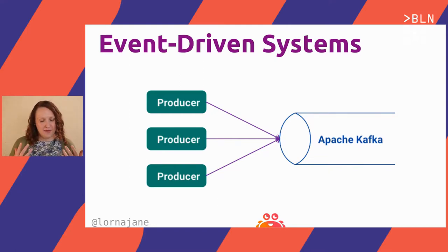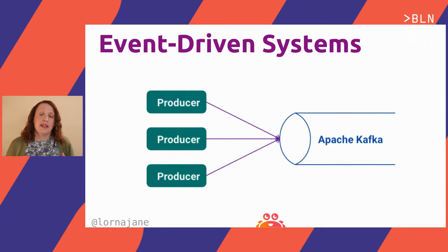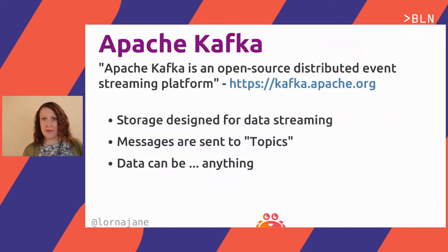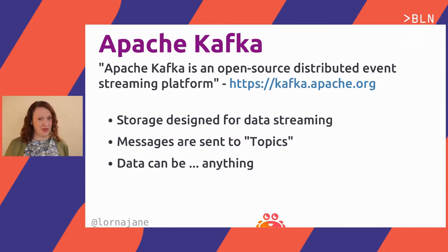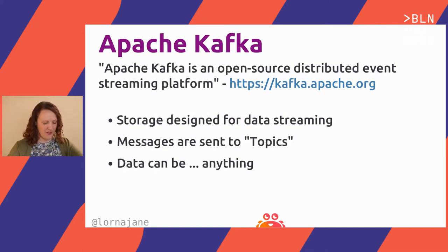Data is just data — it flows around; events are just events. But we need to design that data well for the applications that are going to be making use of it. Today's examples focus on Apache Kafka as the event streaming platform. From their website: Apache Kafka is an open-source distributed event streaming platform. It's a type of storage, but it's designed for data streaming.